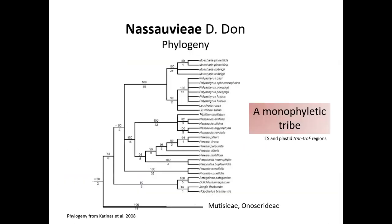Nassauvieae is a monophyletic tribe. All phylogenetic analyses with morphological or molecular data, or with different markers, show the monophyly of the tribe. You can see here the Nassauvieae and the sister tribes Mutisieae and Onoserideae.